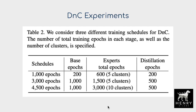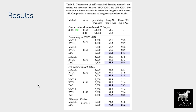An important hyperparameter in Divide and Contrast is the epoch allocation across the three stages: base epochs for forming the initial representation and running k-means, expert epochs for training each cluster's model—which can be parallelized across machines (five clusters to five machines, etc.)—and distillation epochs for training the regression head. The authors form two different schedules for allocating computation across these stages, which is critical for fair comparison against baselines like MoClear or BYOL alone.